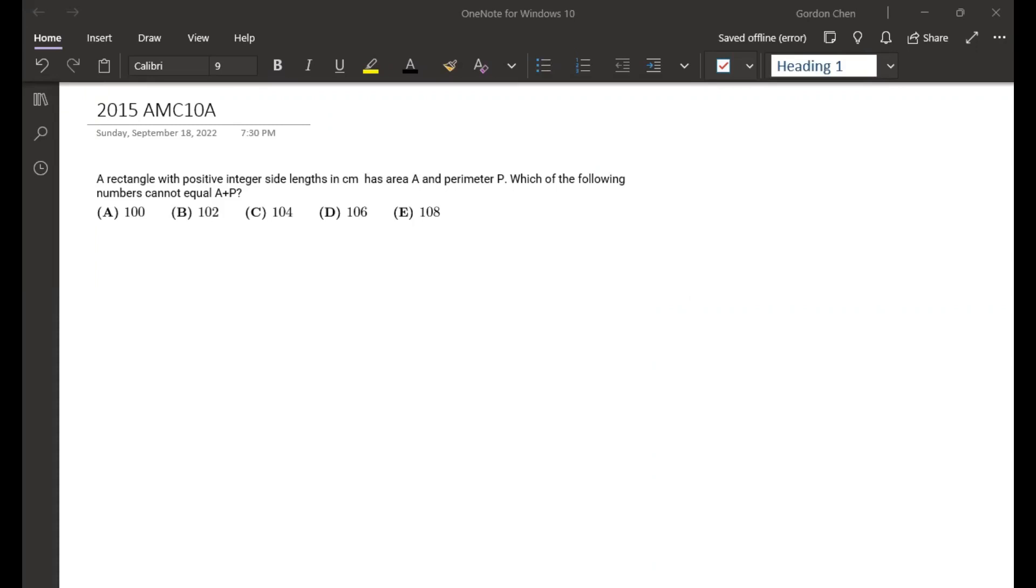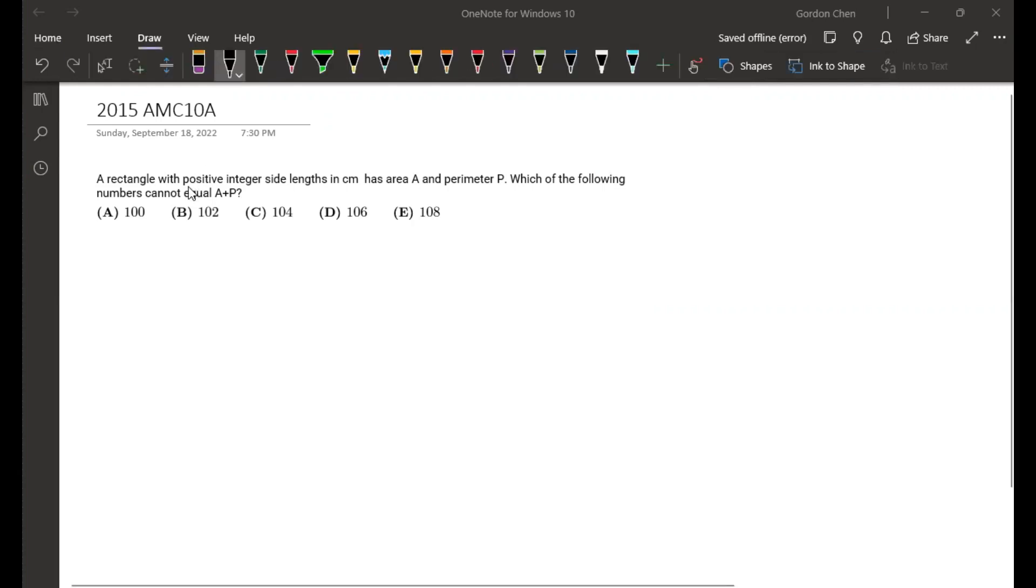Alright, so this is the video for this problem. A rectangle with positive integer side lengths in centimeters has area A and perimeter P. It's a rectangle, so first we can draw it out.